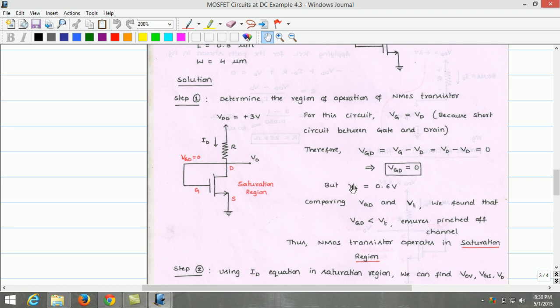However, the threshold voltage of the transistor is 0.6 volts. To determine the region of operation, we can compare Vgd and Vt. Comparing Vgd and Vt values, we found that Vgd is less than Vt. So, this ensures that there is a pinch off in the channel. Thus, the n-MOSFET transistor given here operates in saturation region.